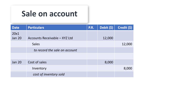Here we have debit accounts receivable, which signifies the credit sale, and we will also see the sale on the credit side. Then debit cost of sales and credit inventory.